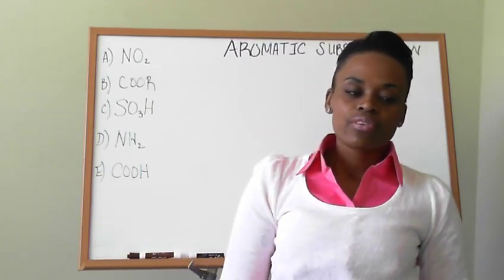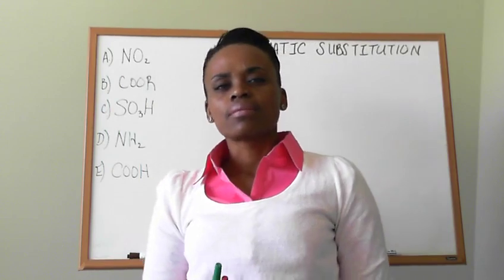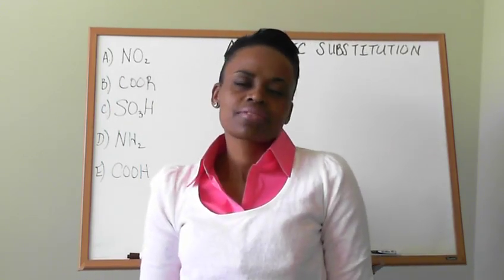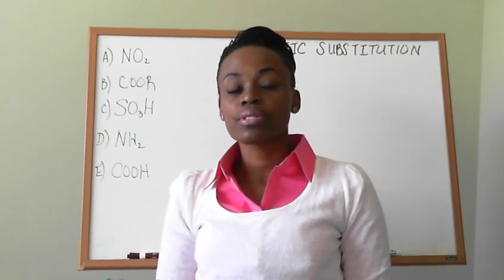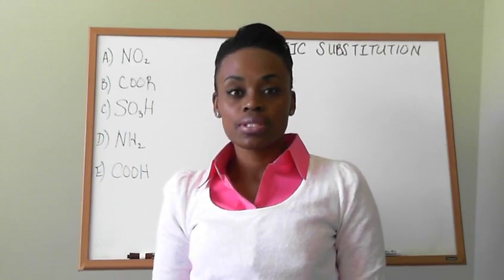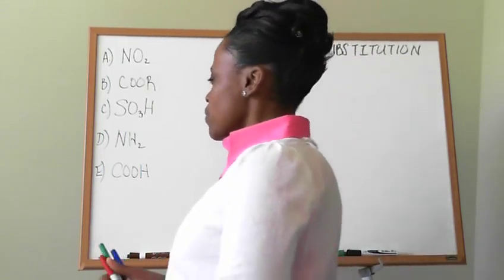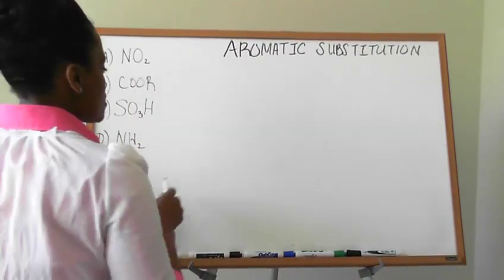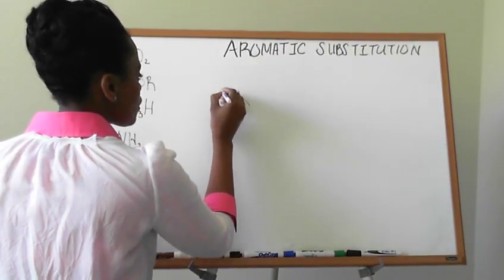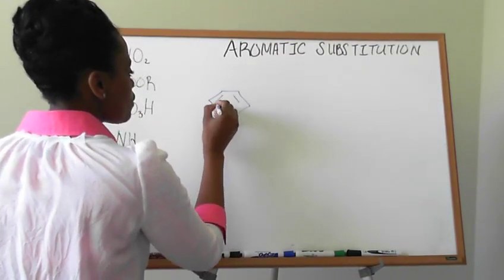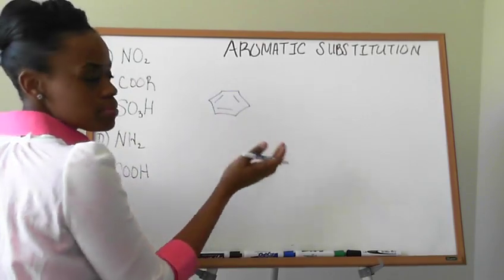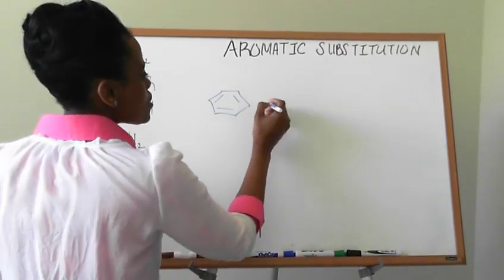If we have an unsubstituted benzene, then it doesn't really matter the directional position to which the substitution takes place. If we have an unsubstituted benzene compound, it only has its hydrogen atoms, and we don't show those, and it goes through EAS, electrophilic aromatic substitution.